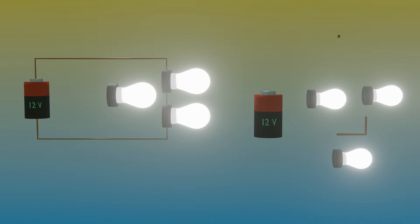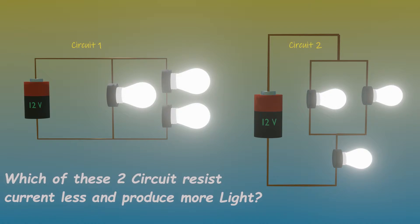Three identical bulbs are connected in a few different ways. Which of these two circuits will resist the current less and put out more light? Take your time to solve the problem.